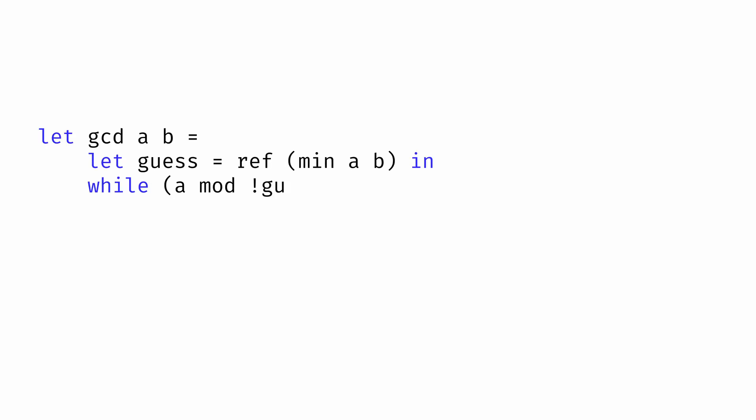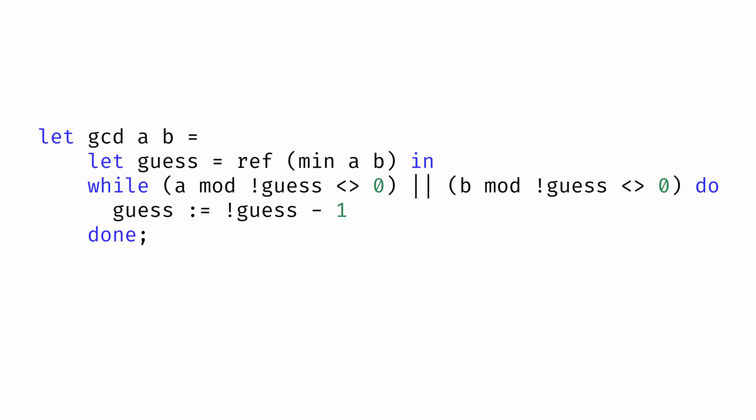Here's that approach written in an imperative programming style. Again, don't focus on the details of the language syntax just yet. What's important is the approach. We're defining a function to compute the greatest common divisor between two values a and b. We start with a guess that's the minimum of the two dimensions.